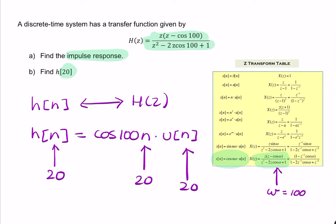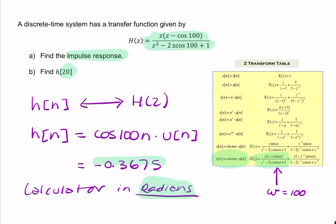Now, U of 20 is simply going to be 1. And cosine 20 times 100 is minus 0.3675, but make sure your calculator is set in radians. Otherwise, you wouldn't get the correct answer there. So that's your final answer for part A and B.